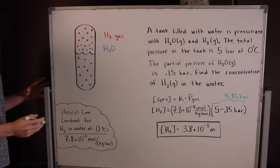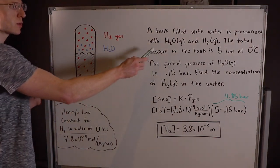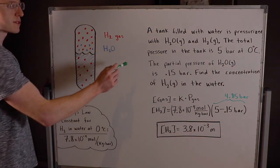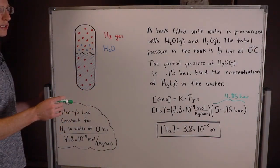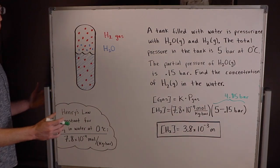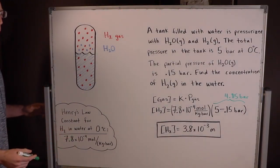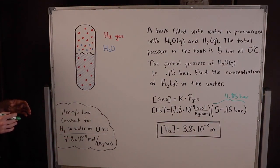So a tank filled with water is pressurized with H2O gas and H2 gas. The total pressure in the tank is 5 bar at 0 degrees Celsius. The partial pressure of H2O gas is 0.15 bar. Find the concentration of H2 gas in the water. So this is clearly a Henry's Law problem.